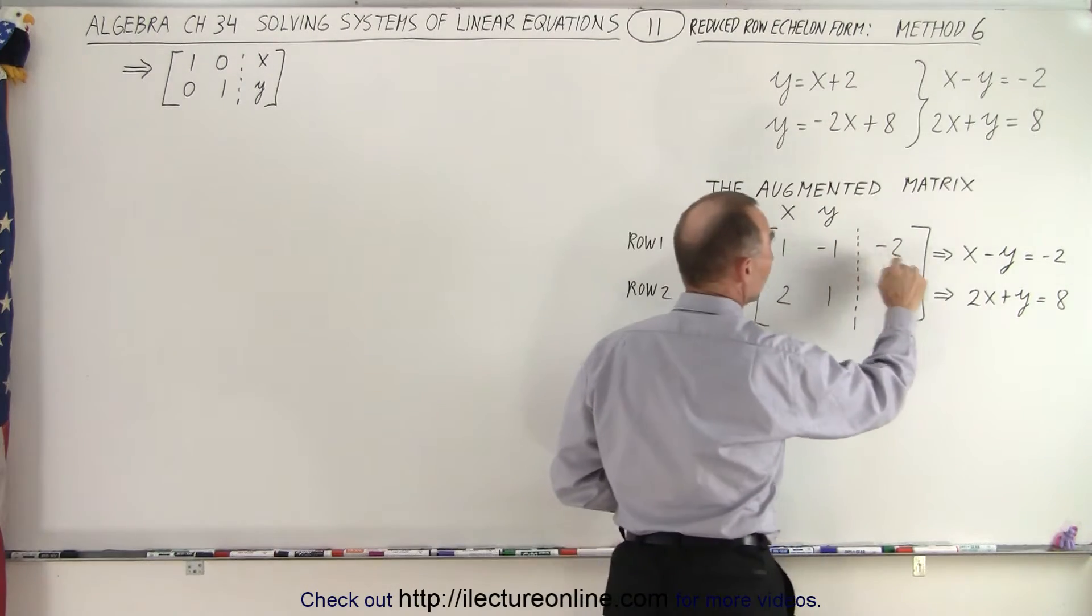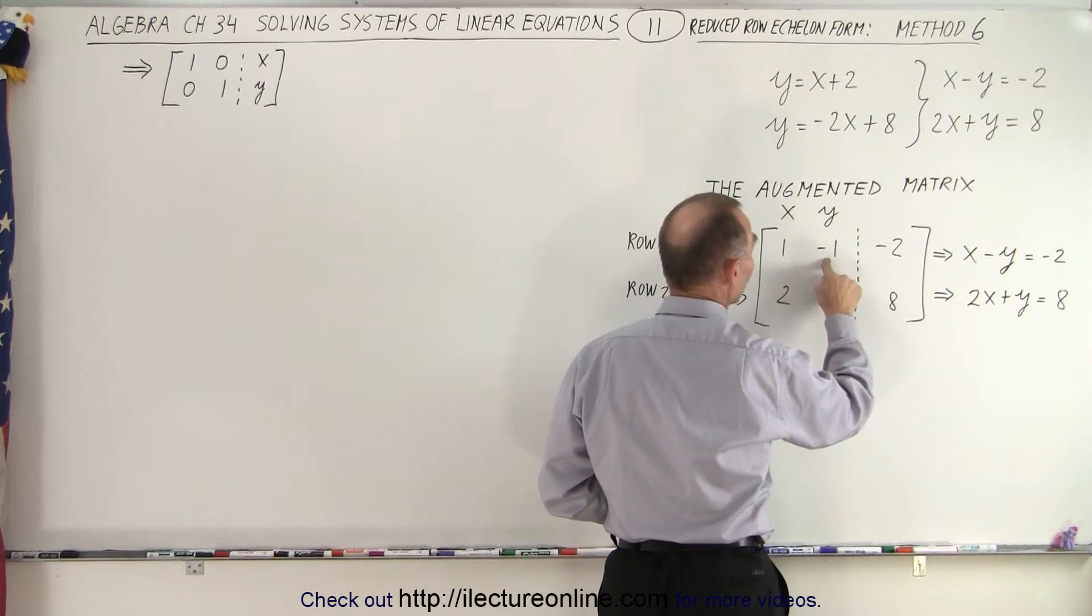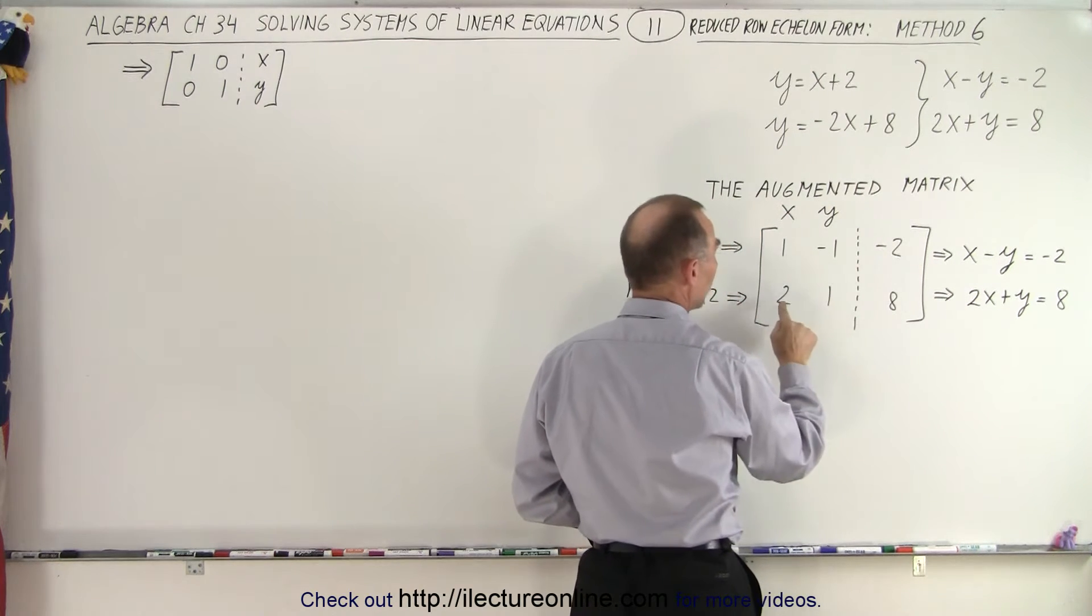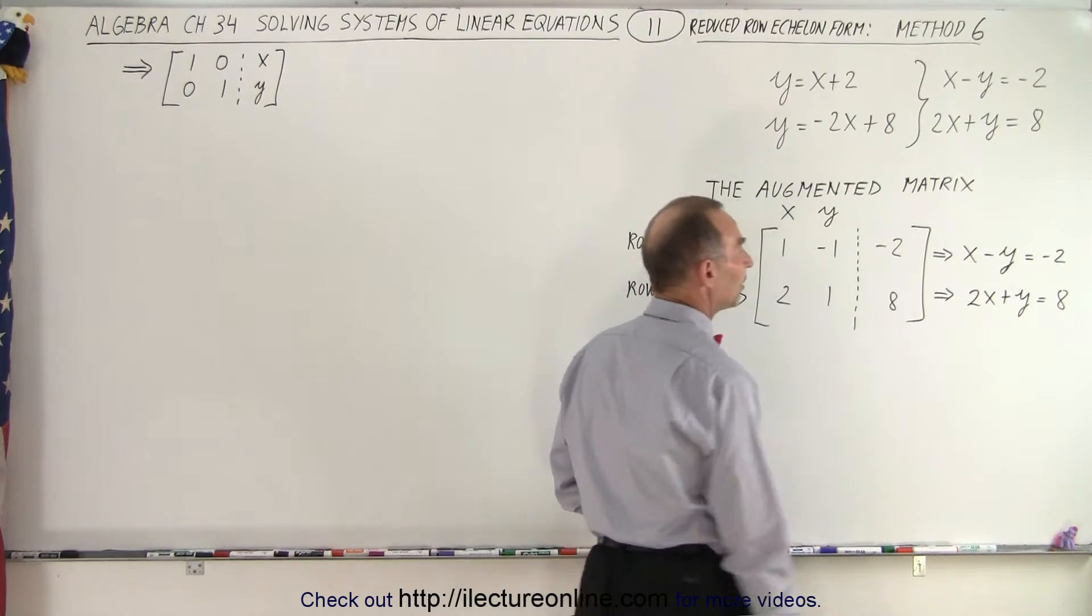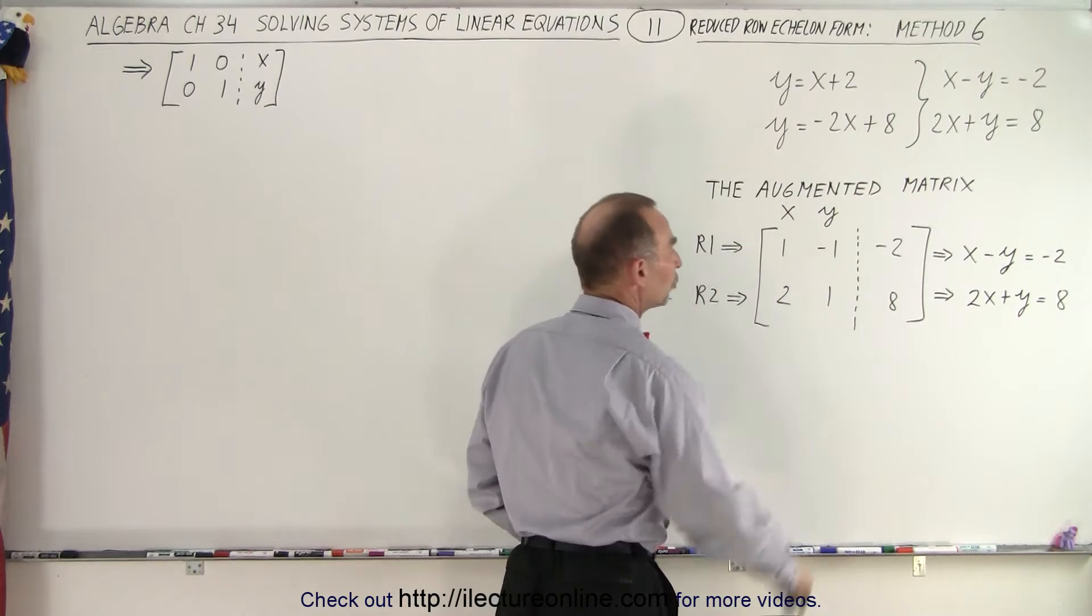This is equivalent to this and this is equivalent to that. 1x minus 1y equals negative 2, 2x plus y equals 8. Notice that this is called row 1 and this is called row 2.